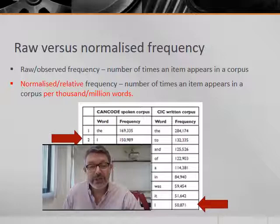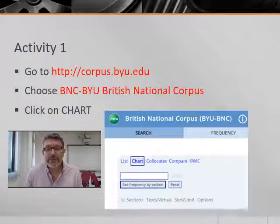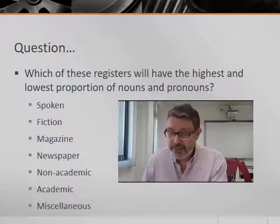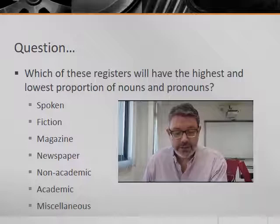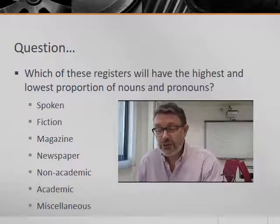So now let's try a task that explores normalized frequencies of common parts of speech in different registers of English. First, let's go to the Brigham Young University suite of corpora, choose the BNC-BYU British National Corpus and click on Chart. Our research question is: which of these registers — spoken, fiction, magazines, newspapers, non-academic, academic and miscellaneous — will have the highest and lowest proportion of nouns as opposed to other parts of speech? In other words, which register is richest in nouns and which is poorest?